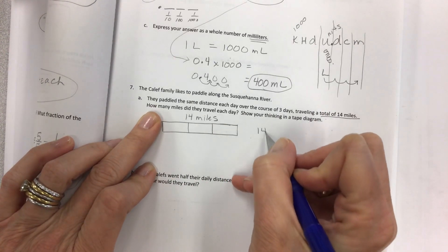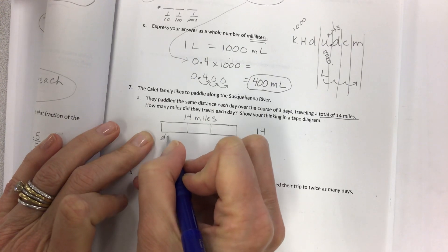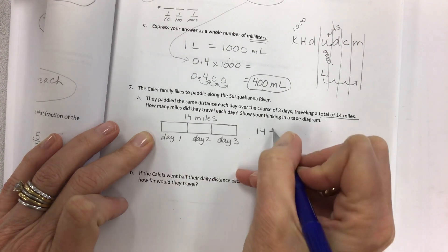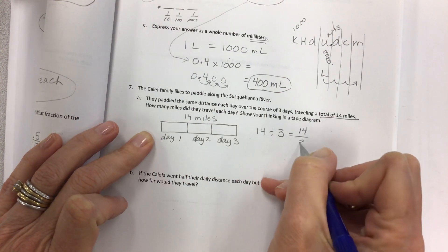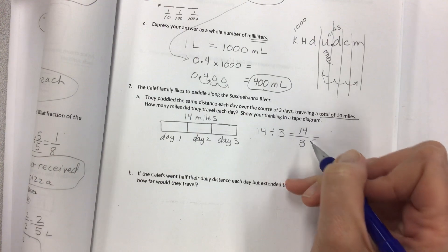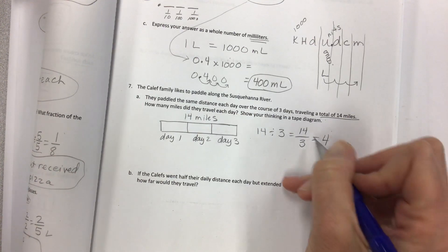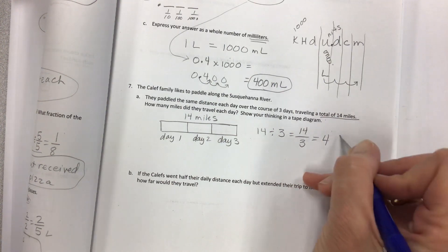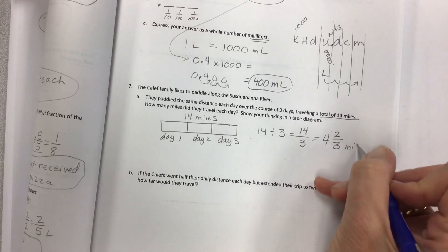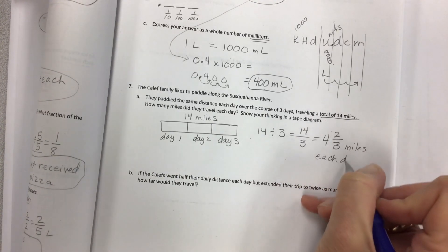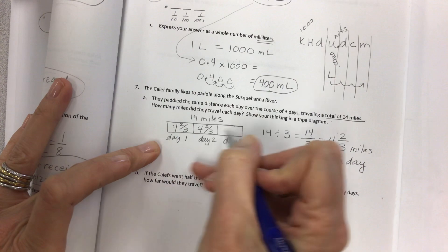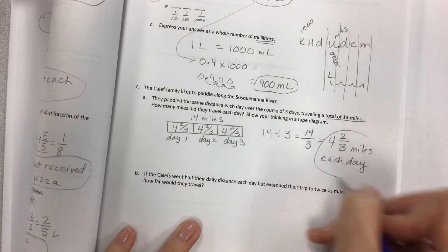Show your thinking in a tape diagram. Take your 14. Let's just label these day one, day two, day three. 14 divided by 3 is 14 divided by 3. So if you want to show this in a mixed number, remember this is a division sign. Three fits into 14 four whole times, and that would be for a total of 12. 12 plus 2 gets 14, and it's 4 and 2/3 miles each day. So this is 4 and 2/3, and this is 4 and 2/3, and so on.